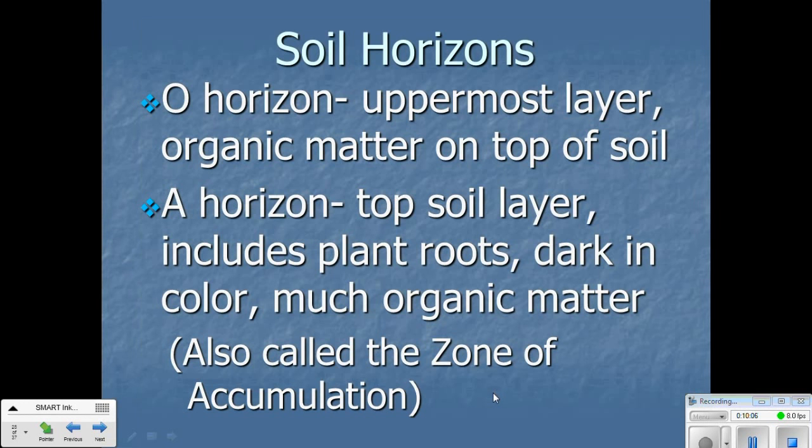The O horizon is the uppermost layer. It has organic matter on top of the soil. The A horizon is the top soil layer, which includes plant roots. It's dark in color because of that material that's breaking down, making the soil richer. There's a whole lot of organic matter, again, because that O horizon is breaking down right above it. And this is also called the zone of accumulation because of all that organic matter that accumulates over time in the A horizon as it breaks down.